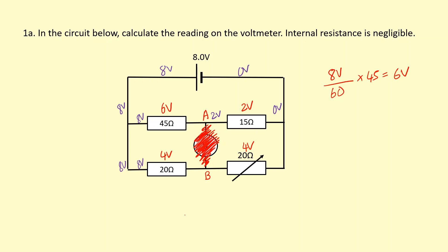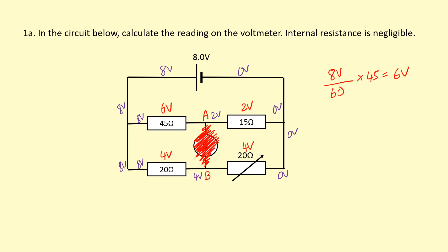When it goes across the 15 ohm resistor it uses the remaining two volts and comes around with zero volts. When this branch goes across the 20 ohm resistor it uses four volts, leaving four volts remaining, then uses the remaining four across the second 20 ohm resistor and comes around with zero volts. So the potential difference between A and B is four volts minus two volts — just two volts.